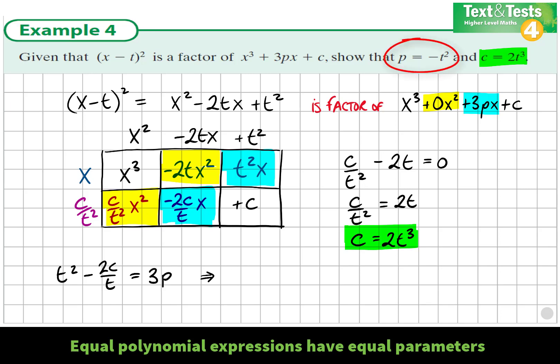The question asks us to express p in terms of t². I'll replace c with the 2t³ we found. Now we write the equation in terms of t's and p. Tidying up, t goes into t³, so I get t² - 4t². Adding gives -3t². Dividing by 3, we see p = -t². We've proven what was asked.